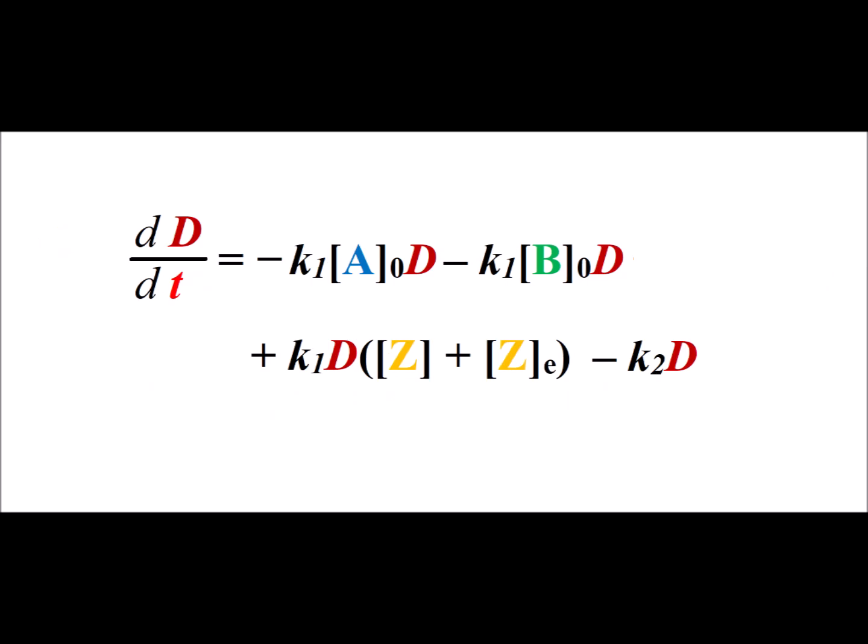Here we substitute the definition of big D, the difference between the concentration of z currently and its concentration at equilibrium, and we make use of the fact that we can factor the difference of squares as the sum or difference of two terms. So x squared minus y squared can be factored as (x plus y)(x minus y).